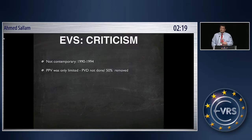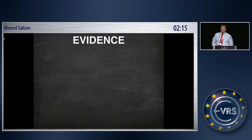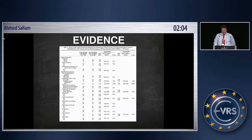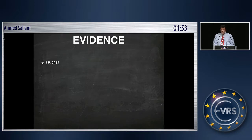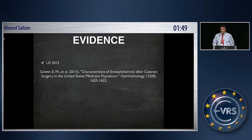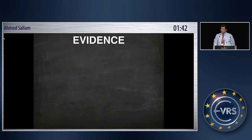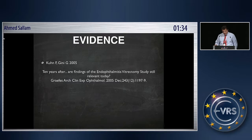There are lots of EVS criticisms — the data isn't contemporary, vitrectomy was incomplete, instrumentation was outdated. But looking at all the evidence: a big Australian study from 2005 showed achieving 6/18 vision was not very different whether you do vitrectomy or intravitreal antibiotics. Similar data from Medicare in the US in 2015 showed the same, and a recent study from Taiwan showed the same — perhaps fewer elective vitrectomies with early vitrectomy. Even my interpretation of Dr. Kuhn and Dr. Gini's data is that they manage patients with injections but earlier vitrectomy — so I don't think it's contradicting.